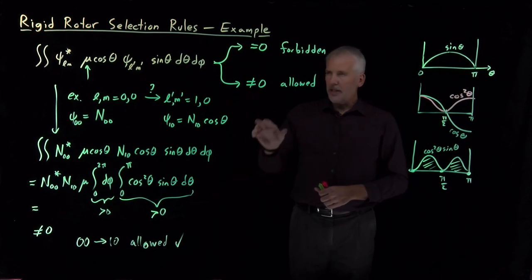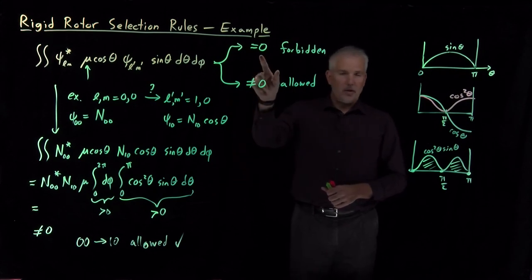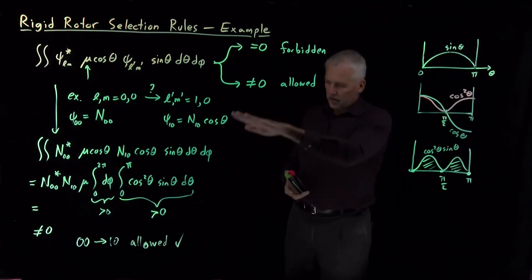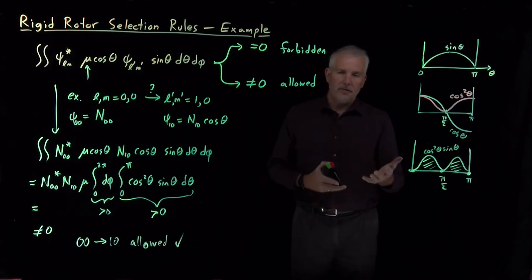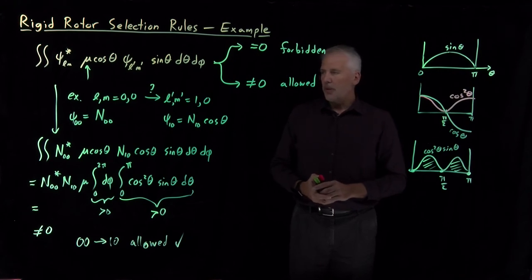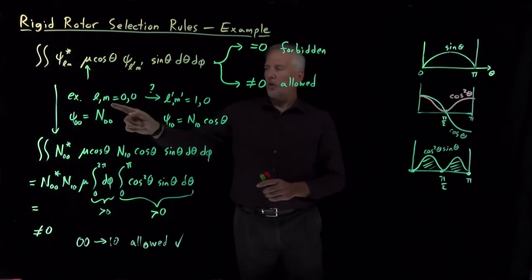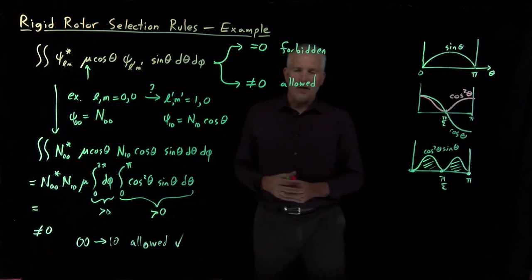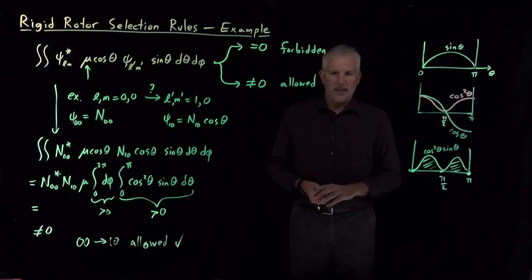We could work another example where the integral comes out to be zero, and that would be a forbidden transition. But obviously, it's going to get a little bit tedious to work one of these integrals for every possible transition that we can imagine. It's much more useful to come up with a general set of rules for which changes in L, which changes in M are allowed or forbidden. So that's the next thing we'll do.